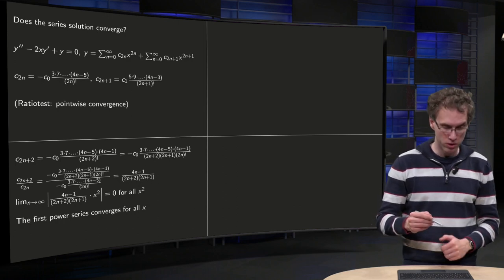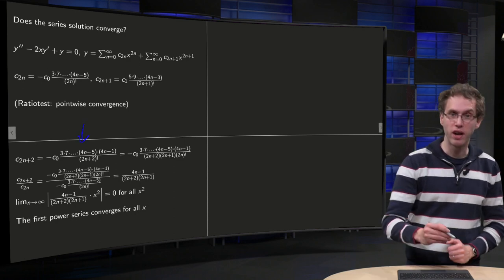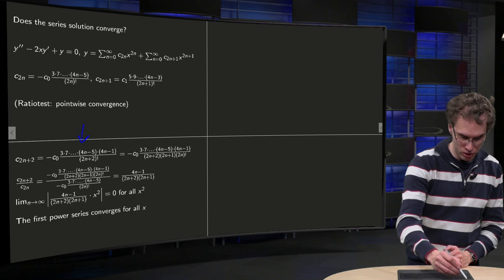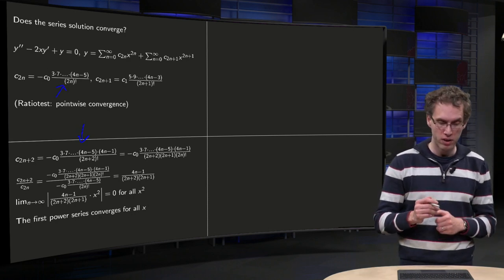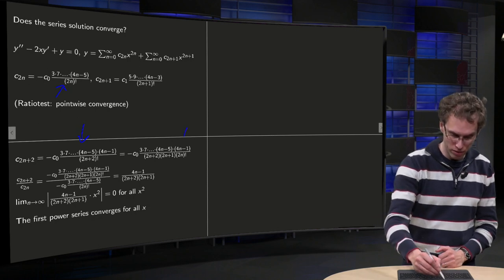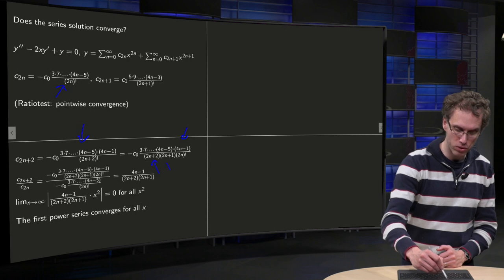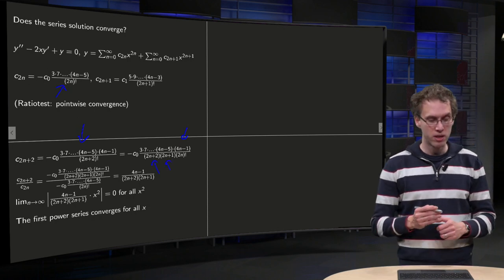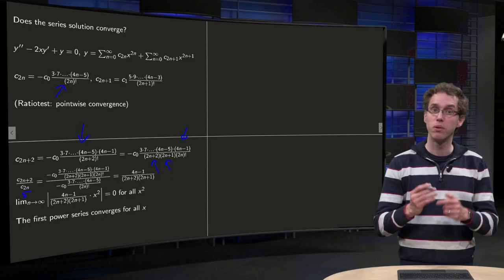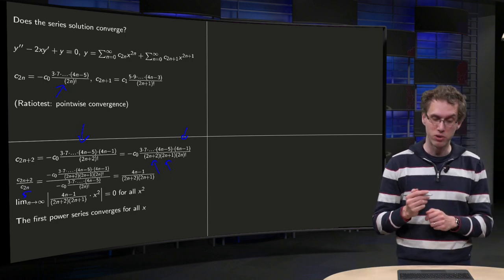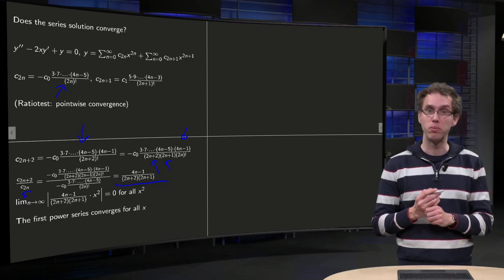So we know c_{2n+2}, it is over there because we have our c_{2n} here, so we just plug in n+1 over there. What you get is an additional 4n-1 over here, and you get an additional 2n+2 and 2n+1 over there. So if you divide c_{2n+2} by c_{2n}, what you are left with is only those additional terms: 4n-1 over (2n+2)(2n+1).